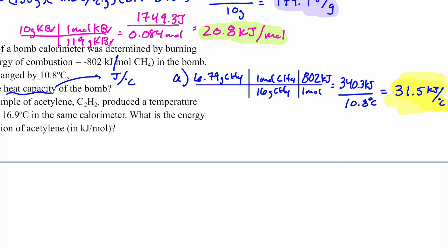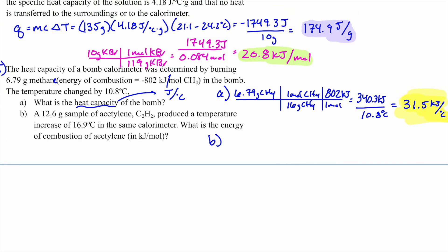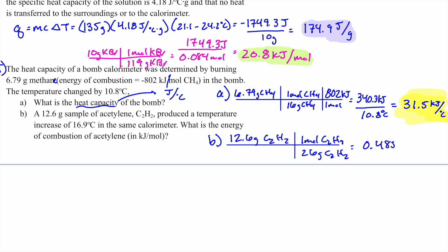Part b: 12.6 grams of acetylene (C₂H₂) produced a temperature increase of 16.9°C in the same calorimeter. What is the energy of combustion of acetylene in kJ/mol? Convert: 12.6 g C₂H₂ ÷ 26 g/mol = 0.484 mol. The molar mass of C₂H₂ is 26 g/mol. Now I have the moles reacting and the temperature change.